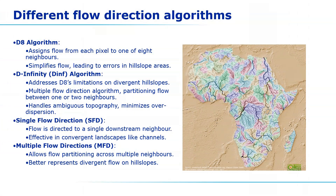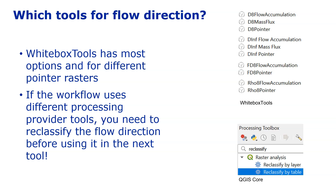Although the D8 algorithm is the most simple and popular one, it might cause challenges in certain landscapes. If you encounter these challenges you might want to try one of the other algorithms available in different toolboxes. For example, the D-infinity or multiple flow direction algorithm is useful when you have divergent hillslopes — it can also handle ambiguous topography and minimizes over-dispersion. Whitebox Tools has the most options for calculating flow direction using different algorithms, and it also supports different pointer rasters. If you want to mix tools from different processing providers in your workflow, it is very important to understand that you need to reclassify the flow direction raster to the encoding expected by the next tool, using reclassify by table from QGIS Core.